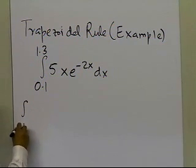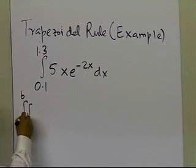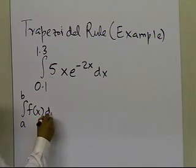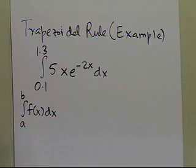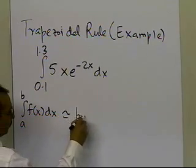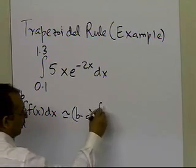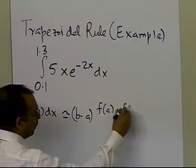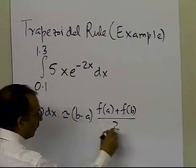Now, as we know, the trapezoidal rule tells us that any function which can be integrated from a to b can be approximated by (b minus a) times (f sub a plus f sub b) divided by 2.